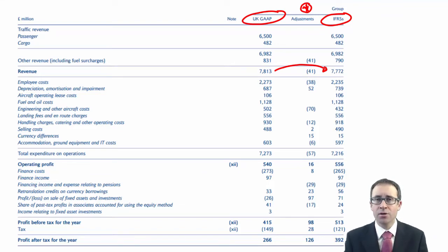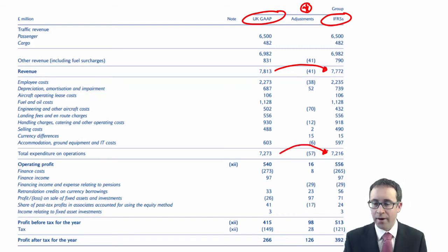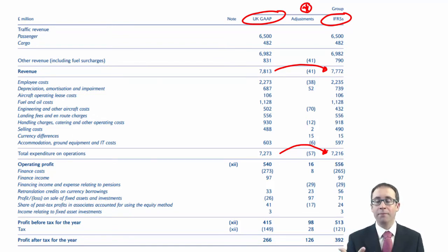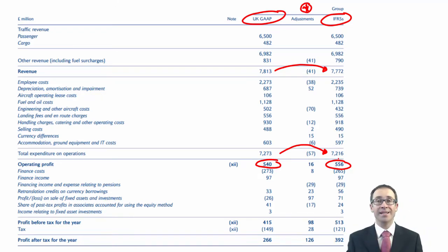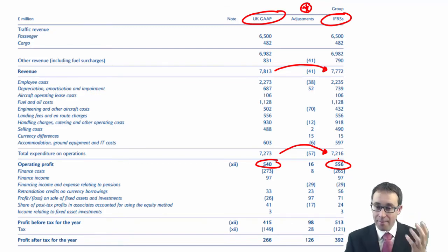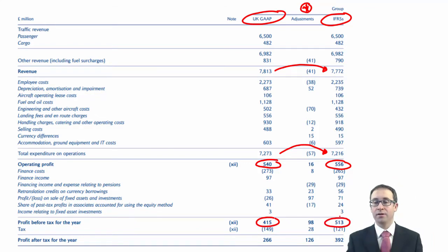So it's not a pretty picture that your revenue is much lower. However, that is more than compensated for when you look at expenditure on operations — the expenditure under IFRS was much lower, which compensated for the reduction in revenue. Your operating profit was 540 under UK rules, but under IFRS it was 556. Other adjustments that followed then made the profit before tax of 415 a much higher profit before tax of 513 under IFRSs.